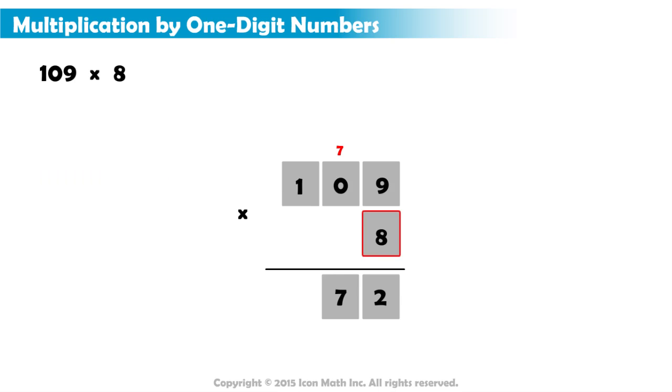Finally, 8 multiplied by 1 is 8. So, we write our 8 in the next column to the left of 7. Our answer or product is 872.